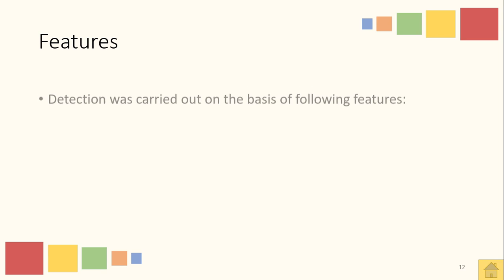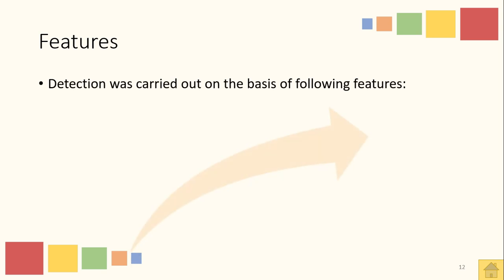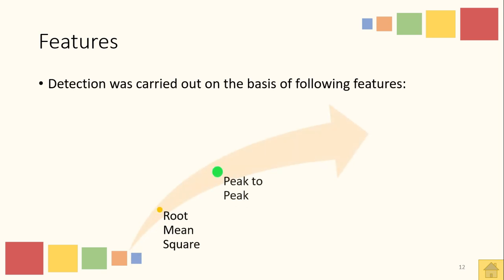Before classifying the signals, it is important to perform feature extraction. The features giving the best results are shown in this slide: root mean square, peak-to-peak, and kurtosis.